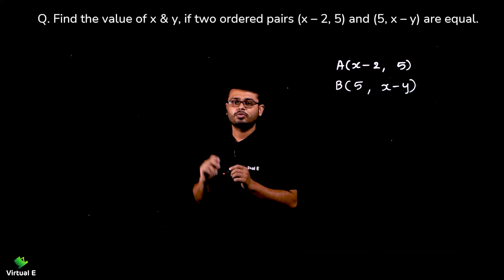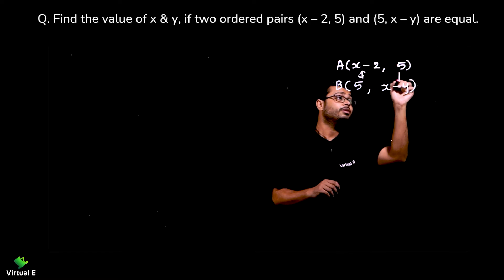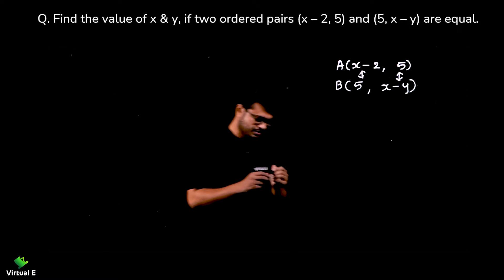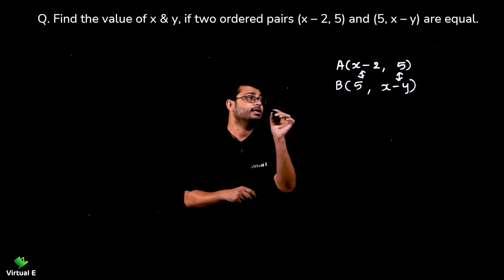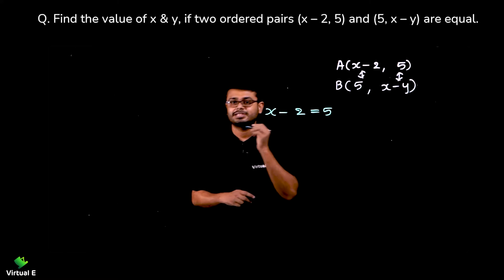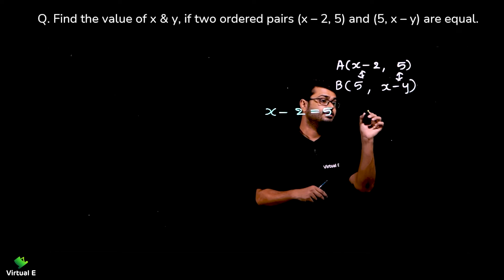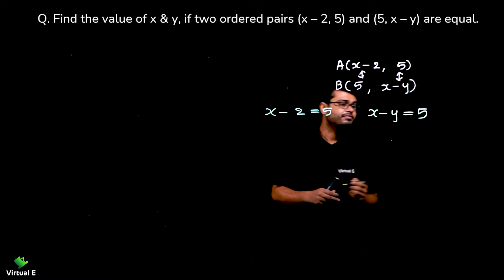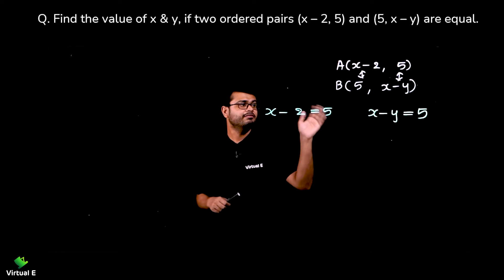Since these points are equal, their x-coordinates will be equal and their y-coordinates will be equal as well. So we can write two equations: x minus 2 equals 5, and x minus y equals 5.